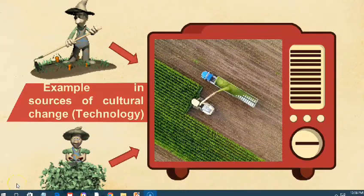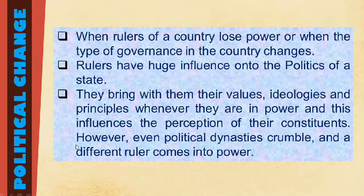After discussing the introduction to society, culture and politics, and the different social and cultural changes, we now go to Political Change. Political change is when rulers of a country lose power or when the type of governance in a country changes. Rulers have a huge influence on the politics of a state because they bring with them their values, ideologies, and principles whenever they are in power, which influences the perception of their constituents.